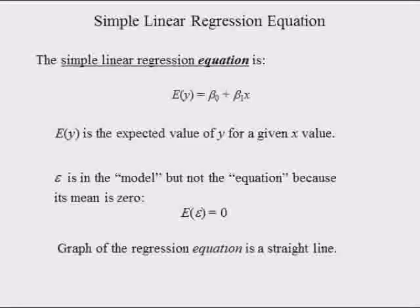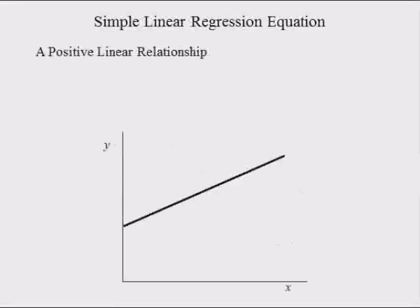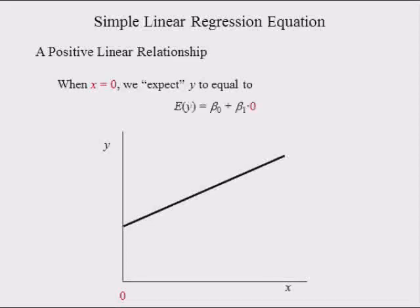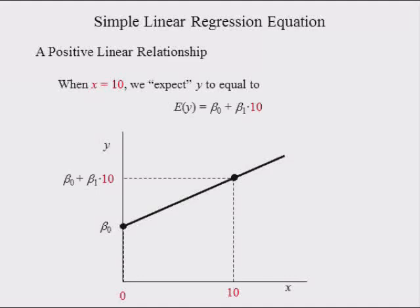The graph of the regression equation is a straight line. It shows how the average of variable y changes as the value of x changes. A positive relationship is an upward sloping line. When x equals 0, we expect y to be equal to beta 0 plus beta 1 times 0, which equals just beta 0, the y-intercept of the regression equation. When x equals 10, we expect y to be equal to beta 0 plus beta 1 times 10.